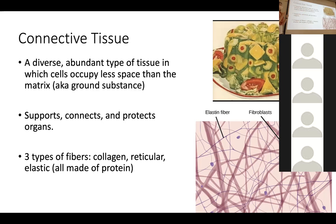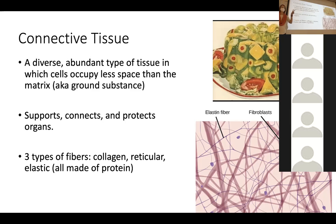There are a lot of functions of connective tissue. Supporting, connecting, and protecting are the three big ones. Connective tissue helps support our organs in space, connects them to membranes, and protects the organs. It can create insulation as well as shock absorption — fatty tissue is helpful for shock absorption, so if we fall, the fat absorbs some of that shock. There are also fibers running through connective tissue: cells, matrix, and fibers are the three main parts. The three fiber types are collagen, reticular, and elastic — all made of protein, running through the matrix.